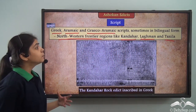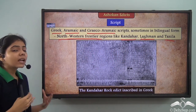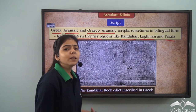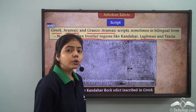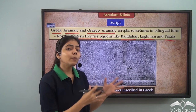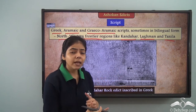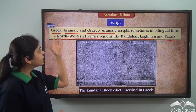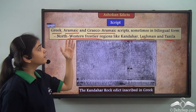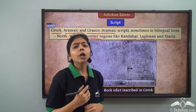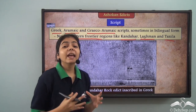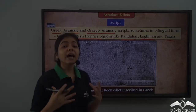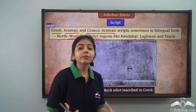Why was there this bilingual form? Because there were people who understood Pali and Prakrit, as well as people who understood Greek, Aramaic, and Greco-Aramaic. This shows that the extent of Ashoka's empire was huge and it had people of many different cultures.